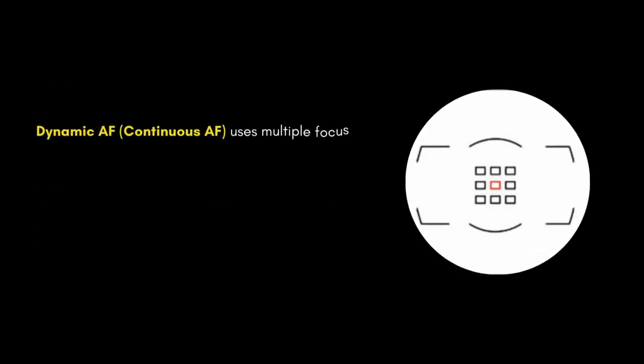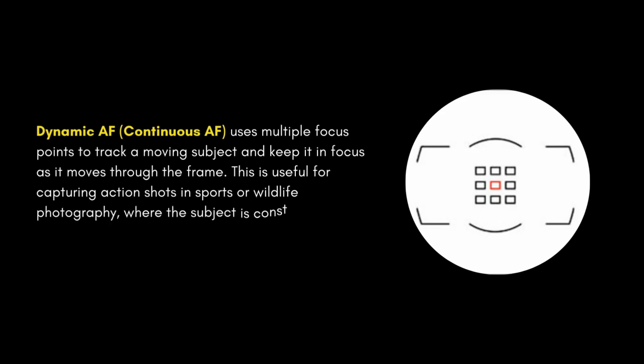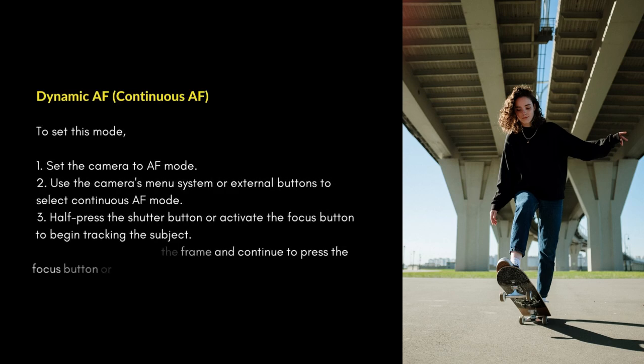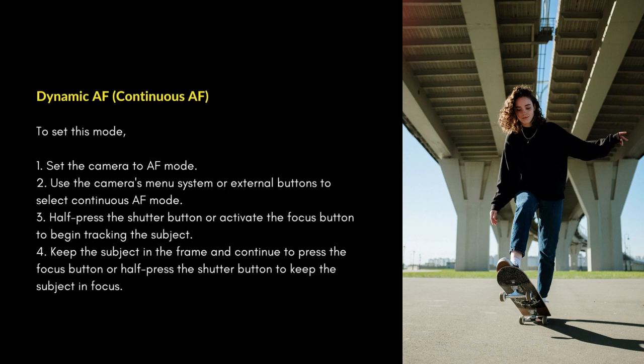Dynamic AF / continuous AF uses multiple focus points to track a moving subject and keep it in focus as it moves through the frame. This is useful for capturing action shots in sports or wildlife photography where the subject is constantly moving. To set this mode, set the camera to AF mode and use the camera's menu system or external buttons to select continuous AF mode.